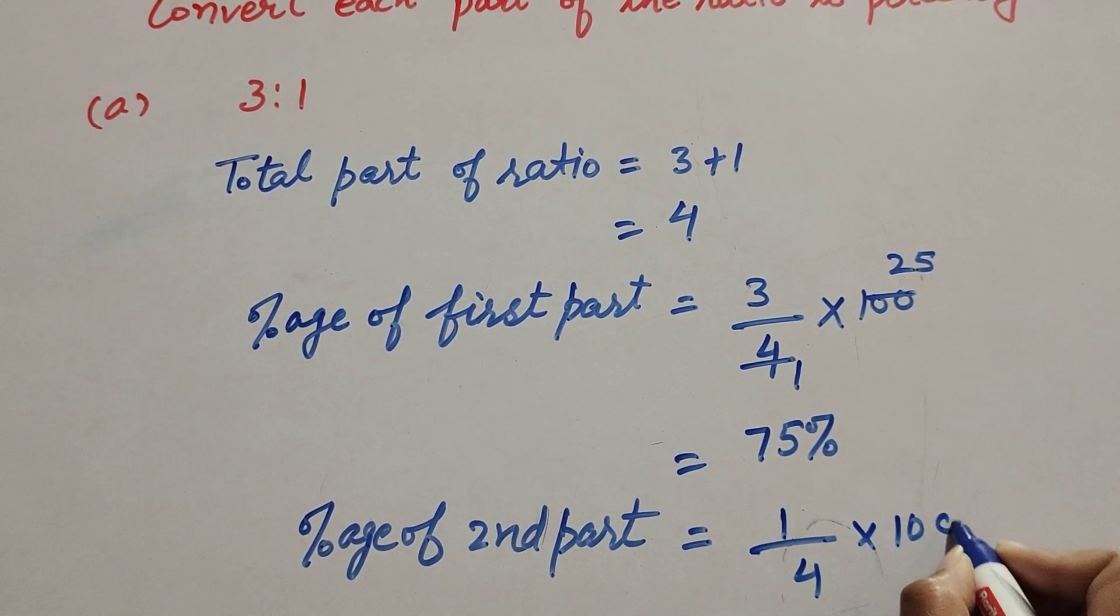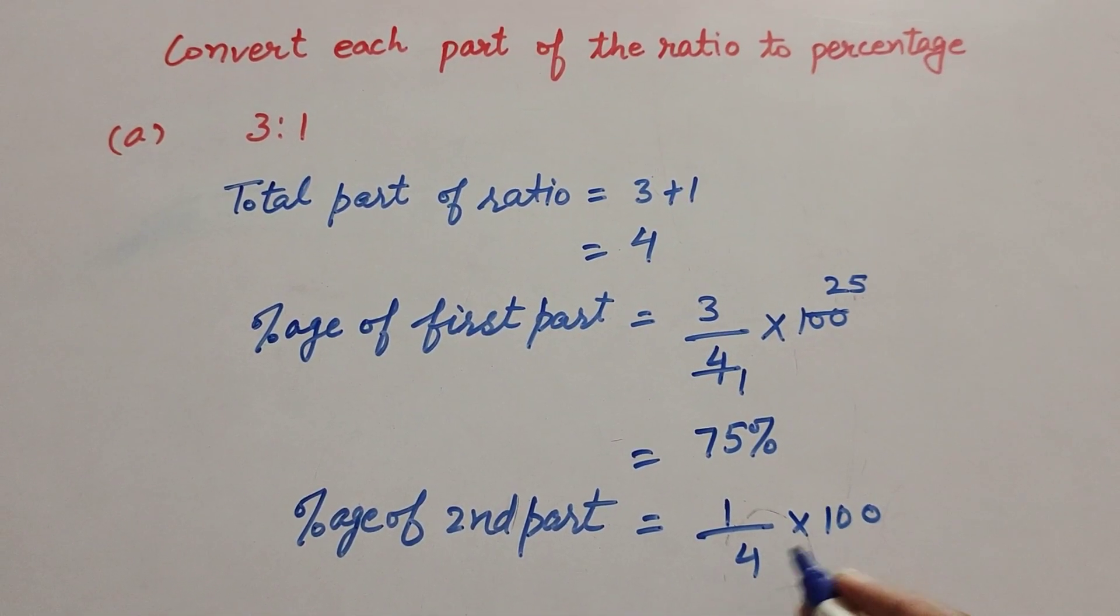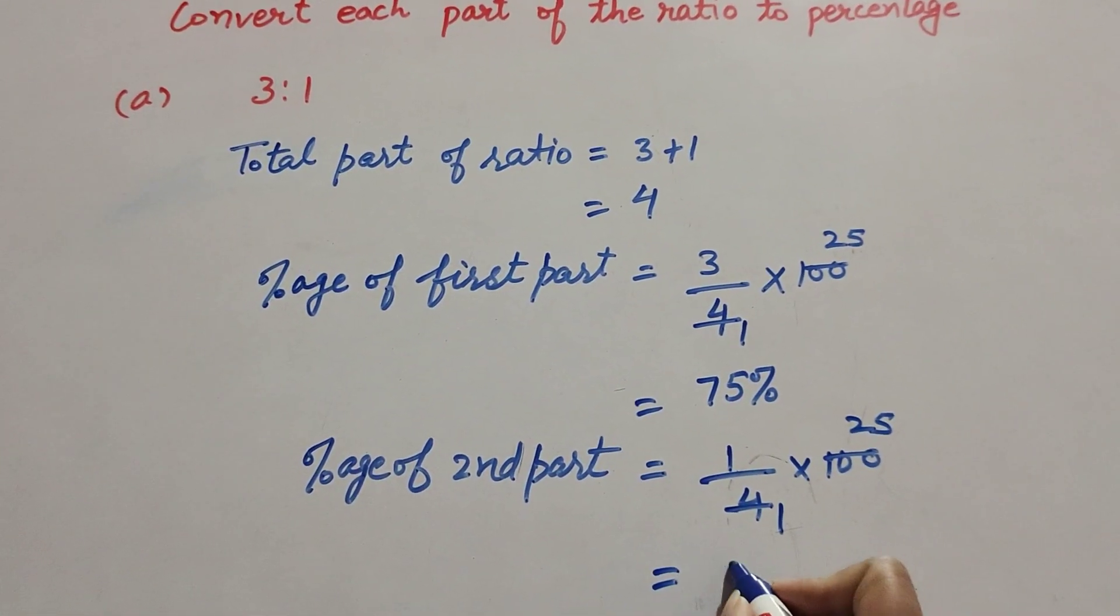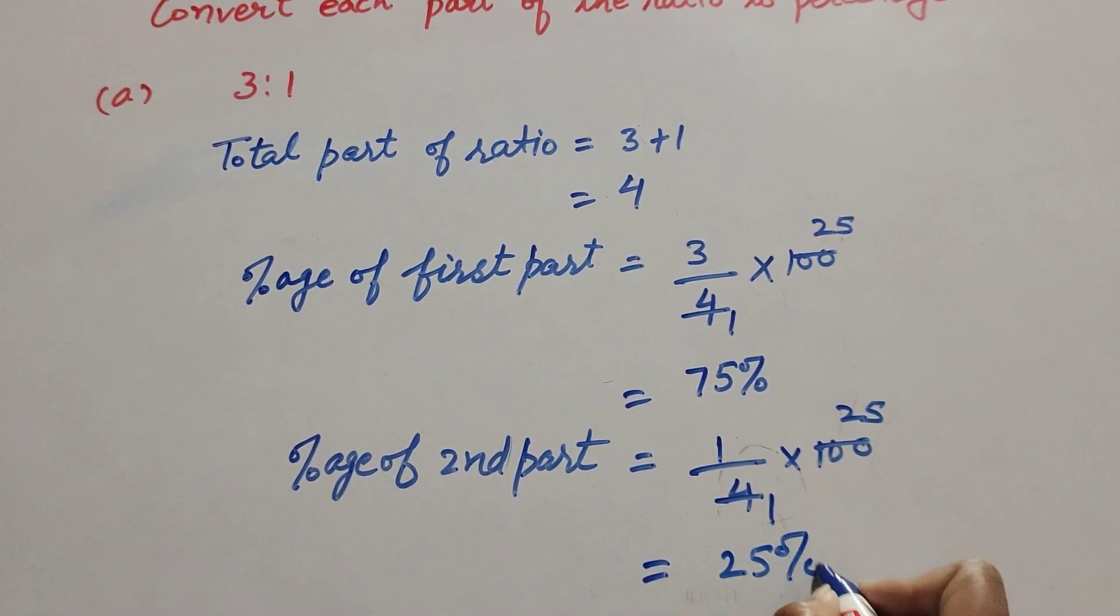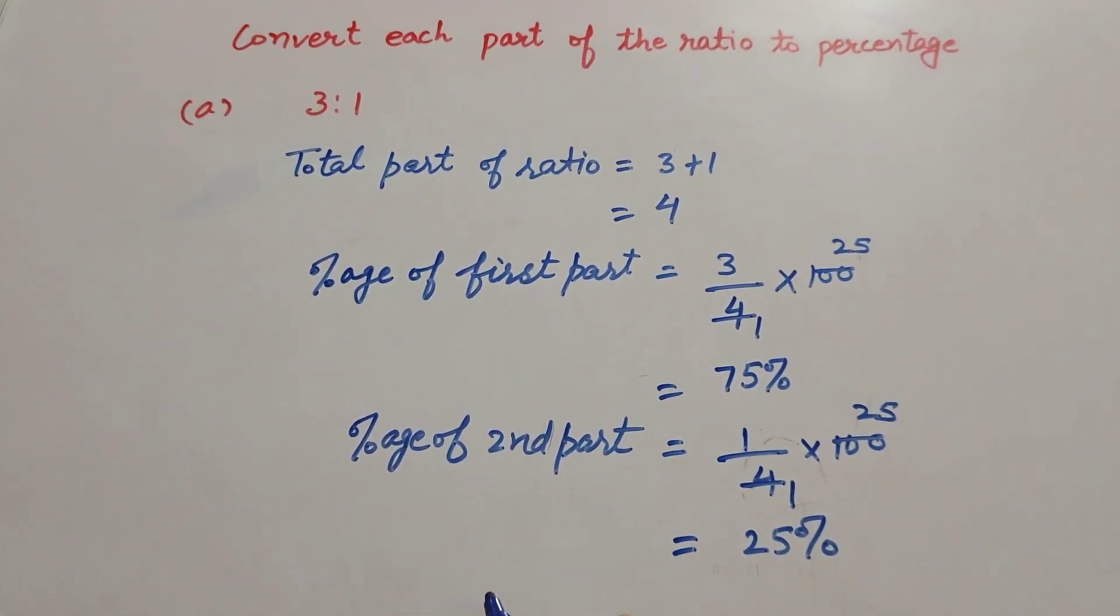Again, 100 and 4 both are divisible by 4, so we cancel them. 4 ones are 4, 25 fours are 100. So it is equal to 1 multiply by 25, 25 percent. The given ratio is 3 ratio 1.